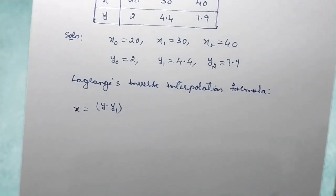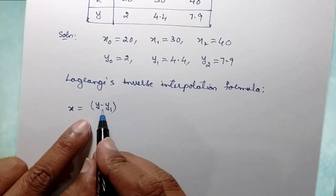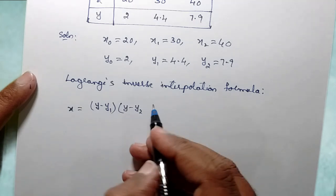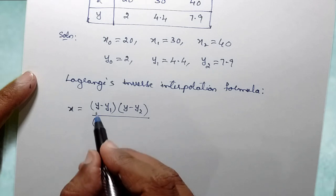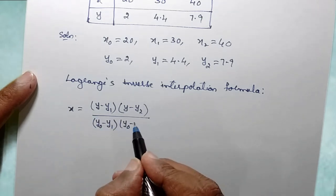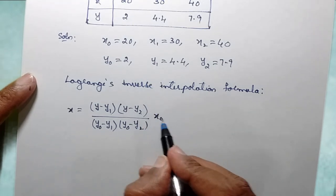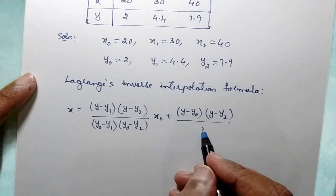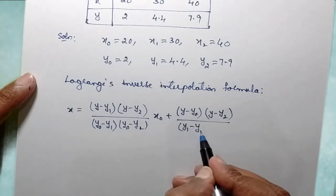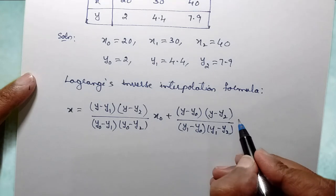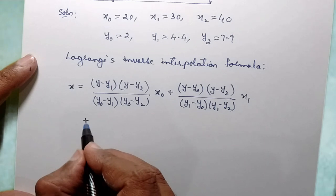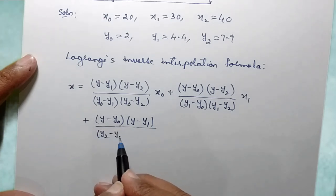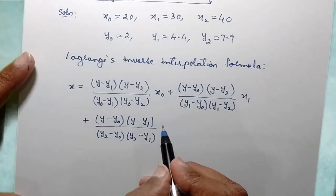Similar to the Lagrange interpolation formula, the only difference is that you write x equals, and values will be in terms of y. The formula is: x = [(y - y1)(y - y2) / (y0 - y1)(y0 - y2)] * x0 + [(y - y0)(y - y2) / (y1 - y0)(y1 - y2)] * x1 + [(y - y0)(y - y1) / (y2 - y0)(y2 - y1)] * x2.